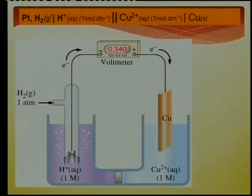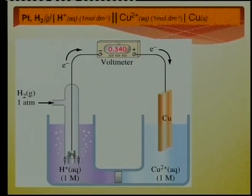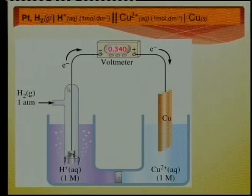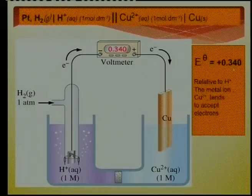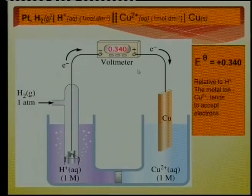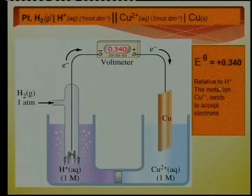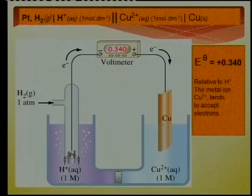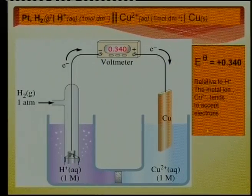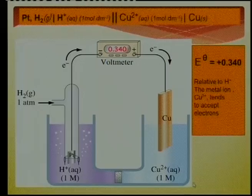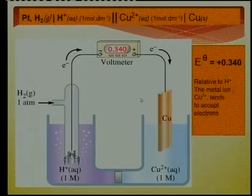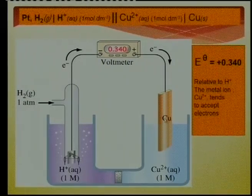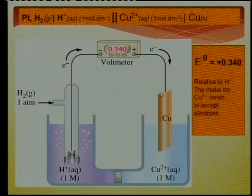When we connect the standard hydrogen electrode to copper, our voltmeter gives a reading of positive 0.34 V. The positive sign means that relative to hydrogen ions, this copper electrode would rather gain electrons from the hydrogen half cell. Electron flow is in that direction. This is how we get the value of 0.34 on our table.